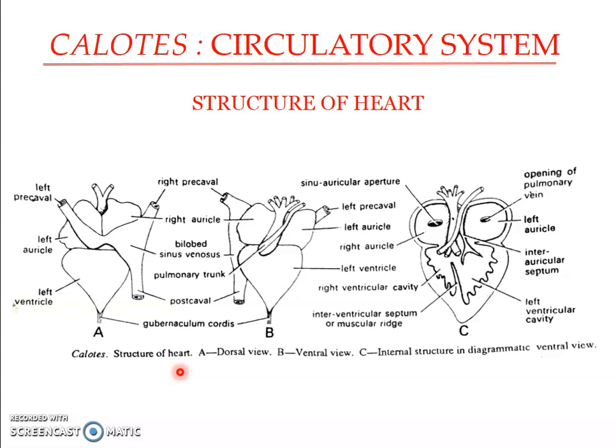The heart is placed in the anterior part of the pleuroperitoneal cavity and is enclosed in a thin transparent membrane called the pericardium. The space between the heart and the pericardium is called the pericardial cavity. The heart is triangular in shape and is a three-chambered structure composed of two auricles and a ventricle. The right auricle is slightly larger than the left auricle.